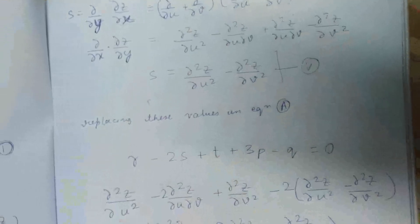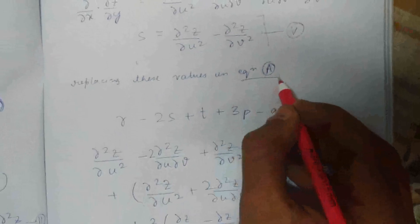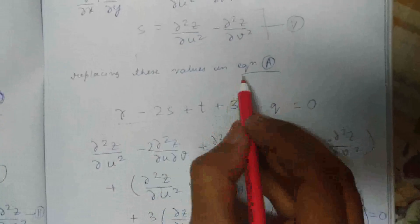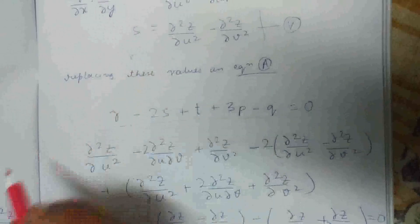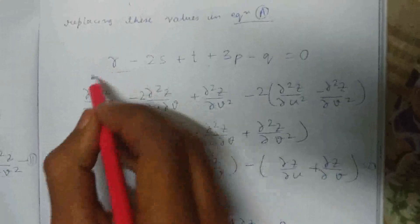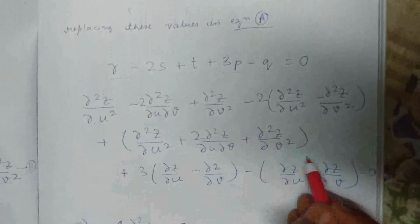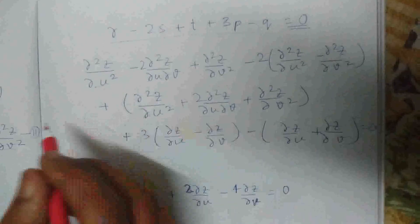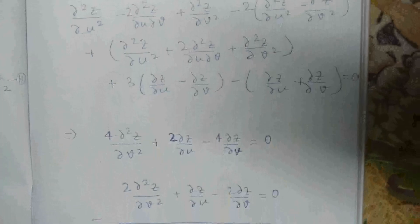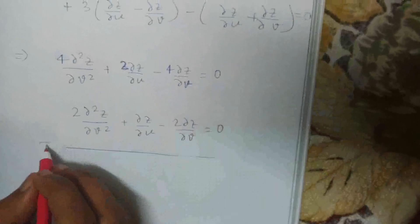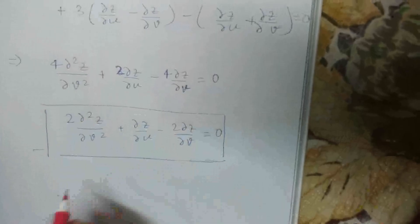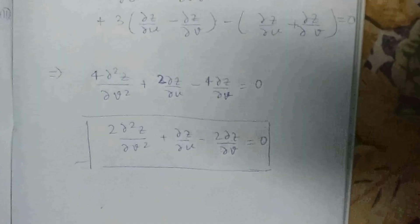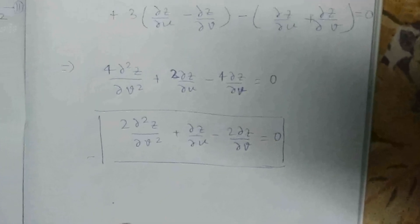Now we just have to put these values in equation A. Equation A, I've already mentioned, is the question given. We keep putting the values of r, s, t and other variables, and we get this long equation equal to zero. Now we do the calculations and we get this final answer. This is the final answer of this question. You can solve other questions of PDE similarly, and in this way you don't have to memorize anything. I'm glad to help and would be helping you in other questions as well. Thank you.